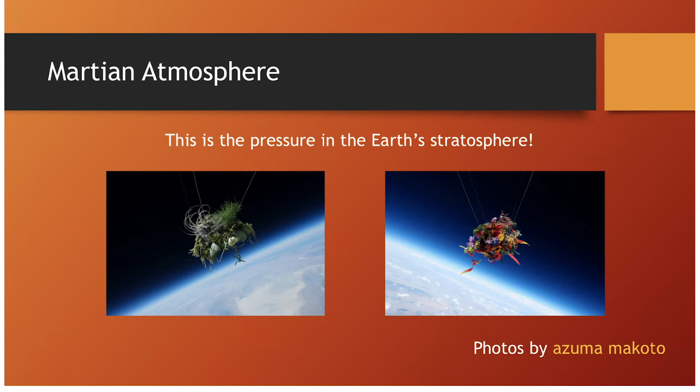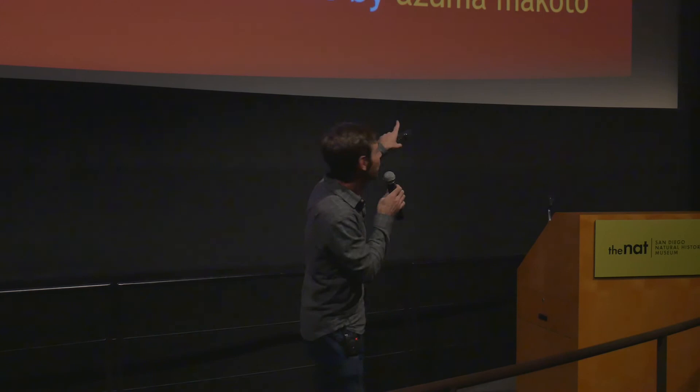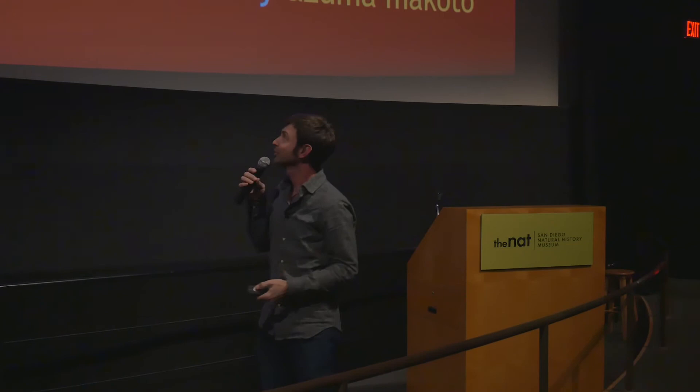This is actually a Japanese flower artist, Azuma Makoto. What this artist does is take flowers, attach them to balloons, and they go up to the stratosphere. You can buy one of these balloons for about 60 to 80 bucks and get a kilogram of mass up to the stratosphere. This gives an idea of just how thin the atmosphere is — you're essentially in space at this point.